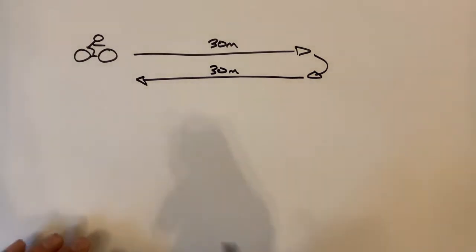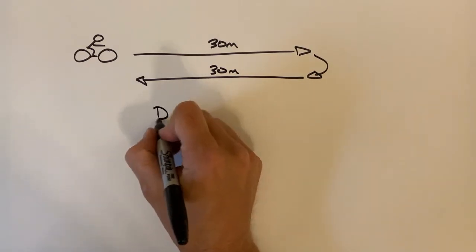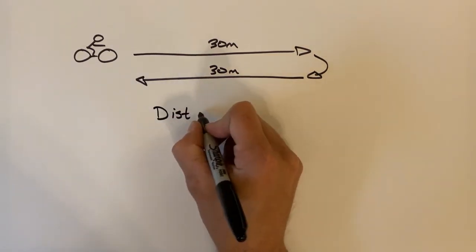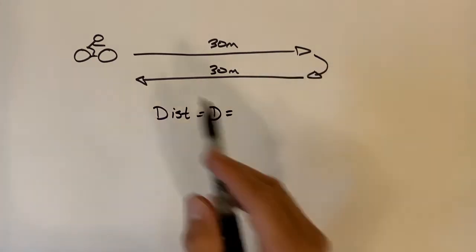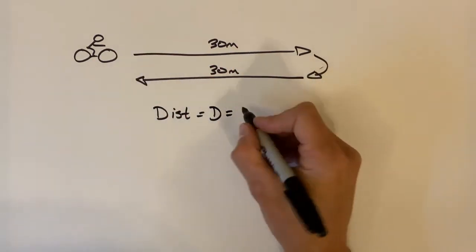Distance is easy enough to find here. All distance is going to be the sum of these two distances traveled. We've got 30 meters plus another 30 meters.